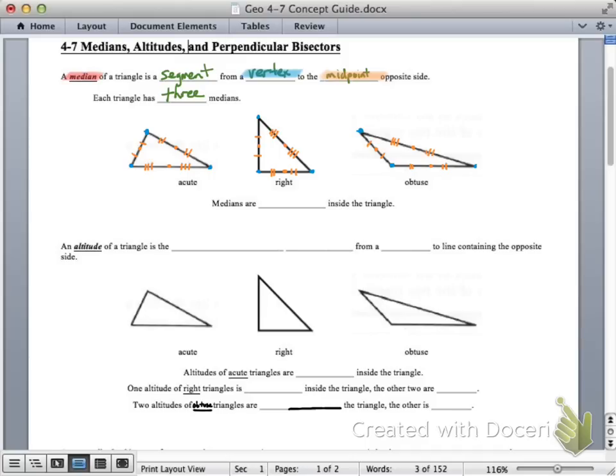And then if I draw the median, there are the three medians of the acute triangle. Here come the three medians of the right triangle. And now the three medians of the obtuse triangle.